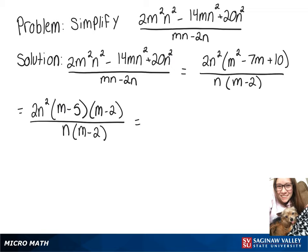Now we can rewrite this as n over n times 2n over 1 times m - 2 over m - 2 times m - 5 over 1.